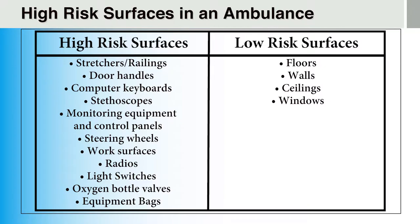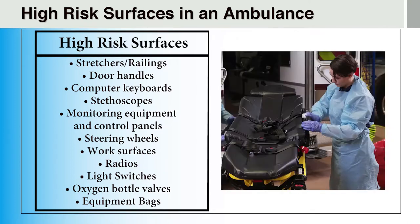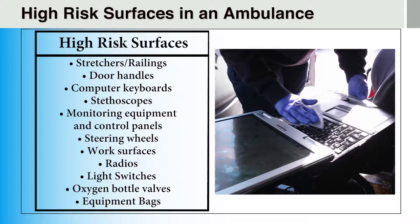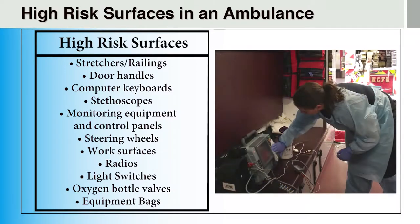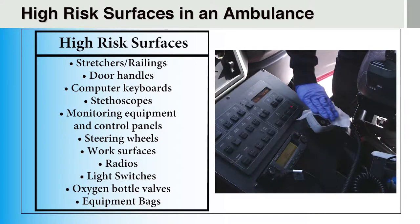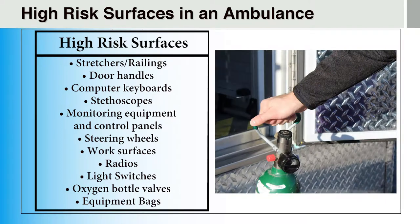High-risk surfaces in an ambulance are those that are frequently touched by hands, gloved or ungloved. These surfaces pose a higher risk of transmitting pathogens and require decontamination between every patient encounter. Example high-risk surfaces are stretchers and railings, door handles, computer keyboards, stethoscopes, monitoring equipment and control panels, steering wheels, work surfaces, radios, light switches, and oxygen bottle valves.